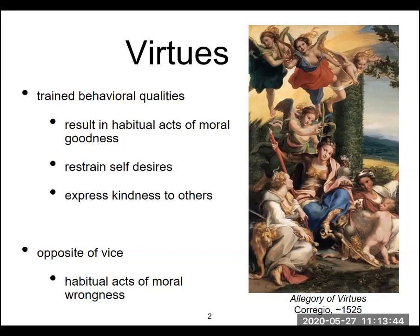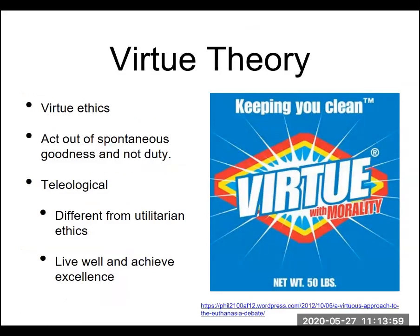Vices are the bad things an individual should not be doing. A virtue is a habitual act of moral goodness; a vice is a habitual act of moral wrongness. The idea is to avoid vices and promote virtues. Within virtue theory, an individual should be acting appropriately as a habitual way — acting out of spontaneous goodness because they are a virtuous person at heart, rather than acting out of some sense of duty.